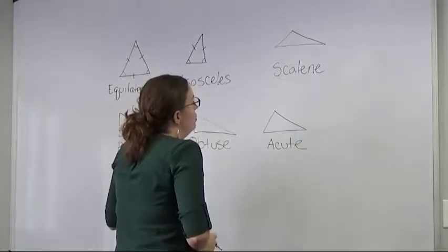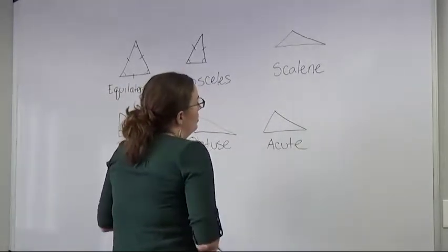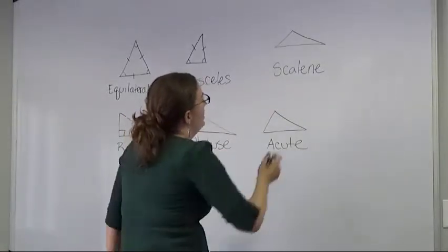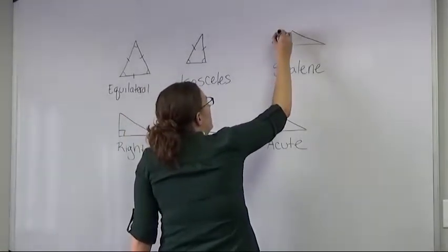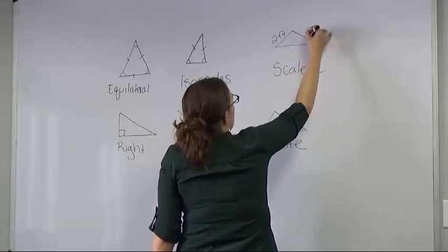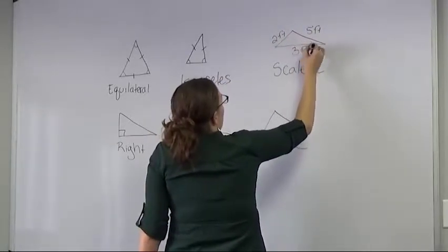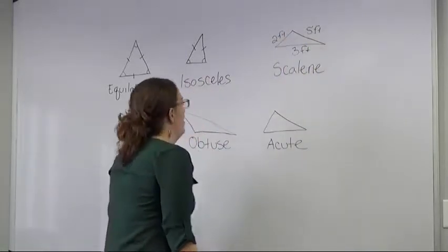A scalene has no equal sides and no equal angles. So everything is going to be a different side length. So let's say that this one equals two feet, this one equals five feet, and then this one equals three feet here. And then that means that none of the angles would equal each other either.